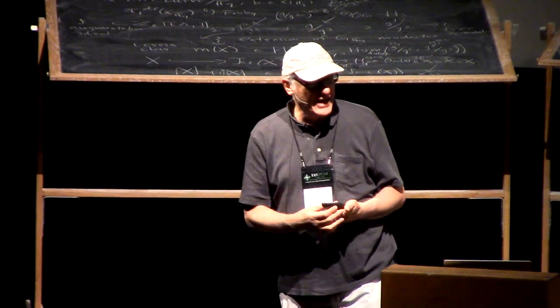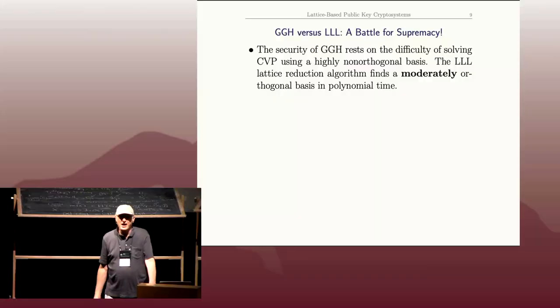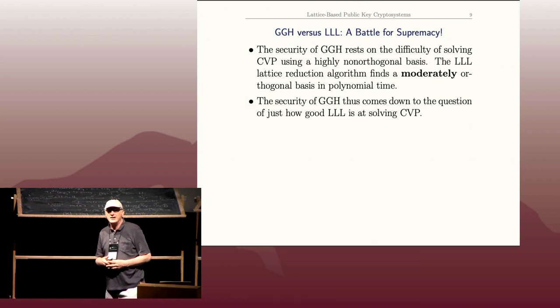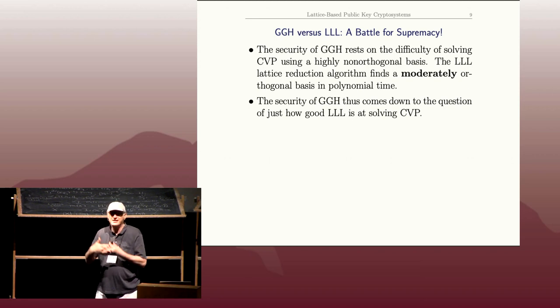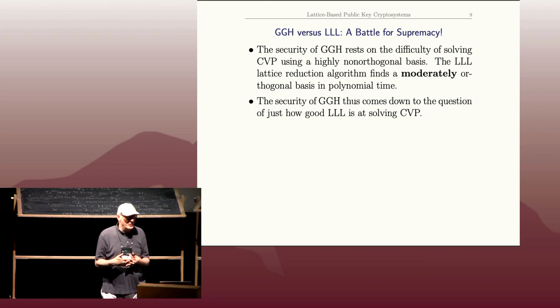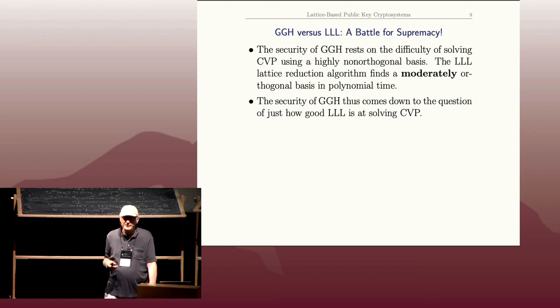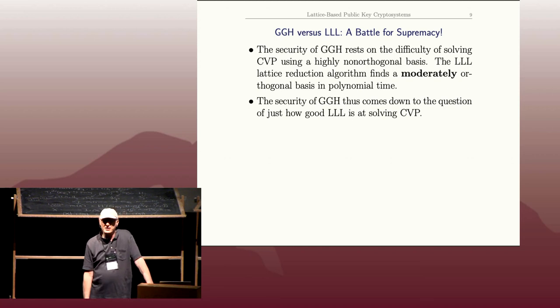If someone wants to break GGH, they need to solve the closest vector problem. The L³ algorithm finds this somewhat orthogonal basis, and depending on how much time you're willing to spend, you can make it better and better. You get this competition: how good is L³ or BKZ L³ at solving the underlying CVP and breaking the system for however much computer time you're willing to devote to it?